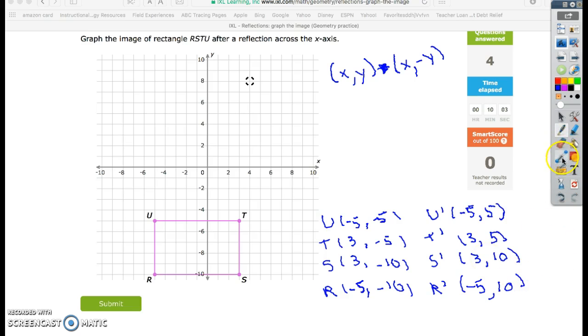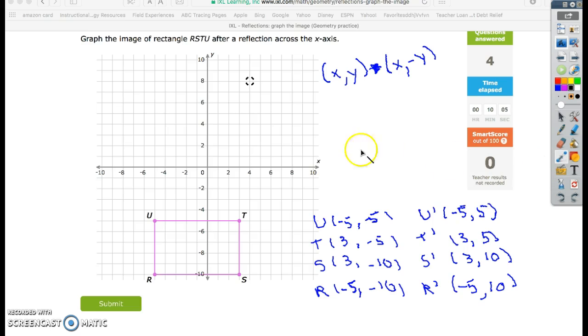All right, so with my new coordinates, I'm going to plot the points. So I'm going to plot U to T first. I'm going to go to negative 5, 5 as my U prime. And draw that over to 3, 5.